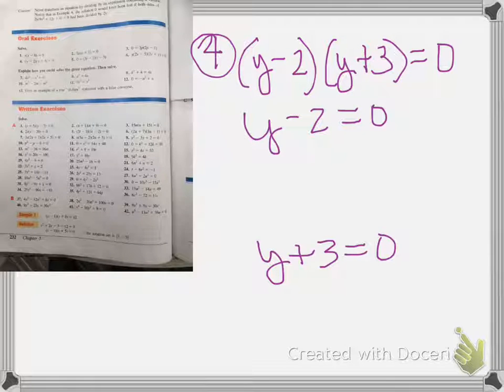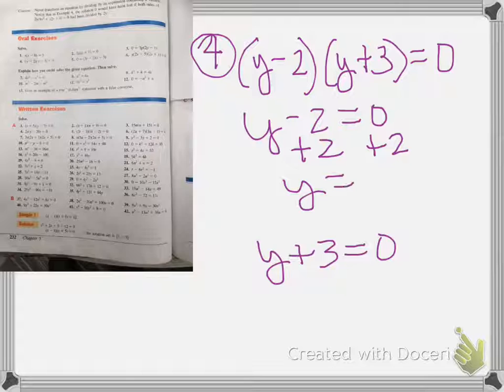So we have to start getting y by itself. So the opposite of subtracting 2 is adding 2, which leaves us with y equals 2.